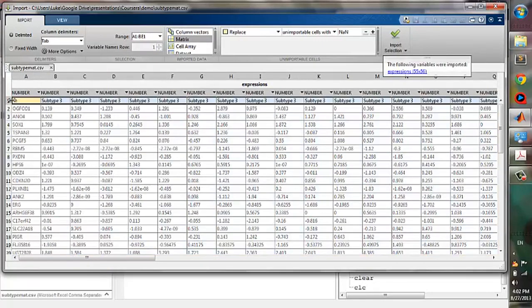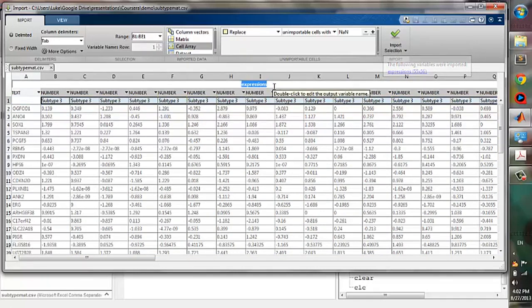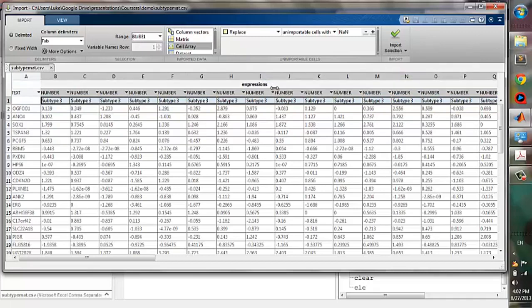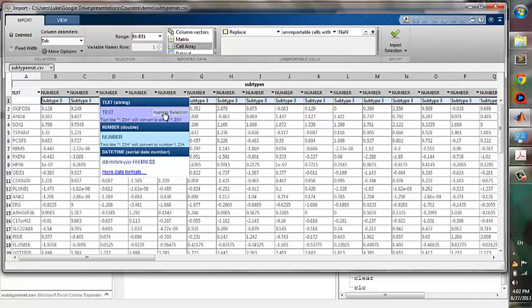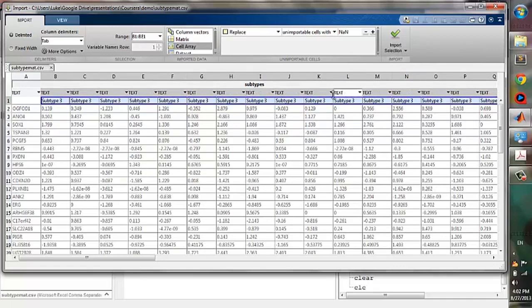Next we will import the column labels. We will import them as a cell array and name it as subtypes. Then we change the data type to text because they are strings, and click import.